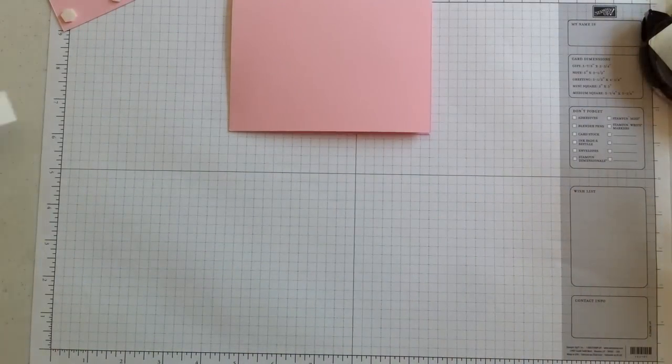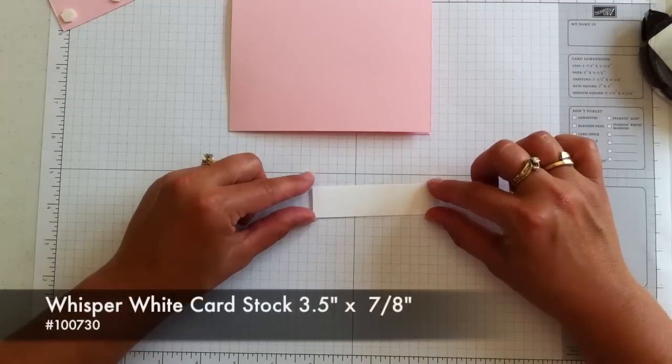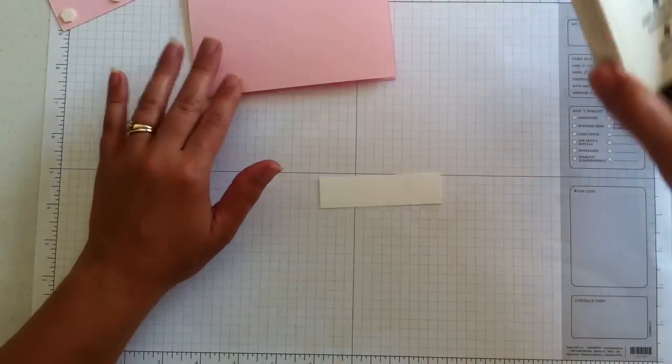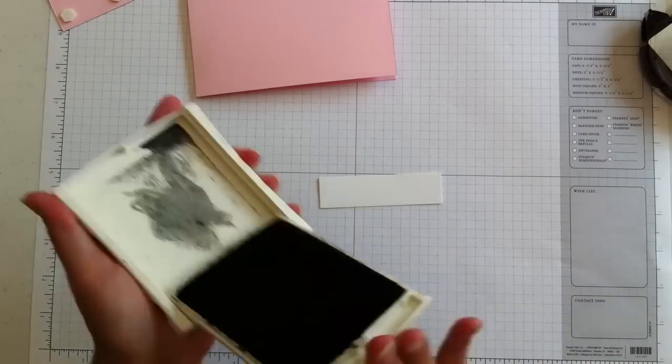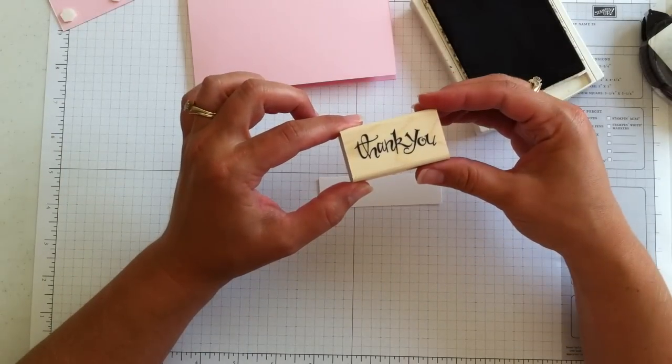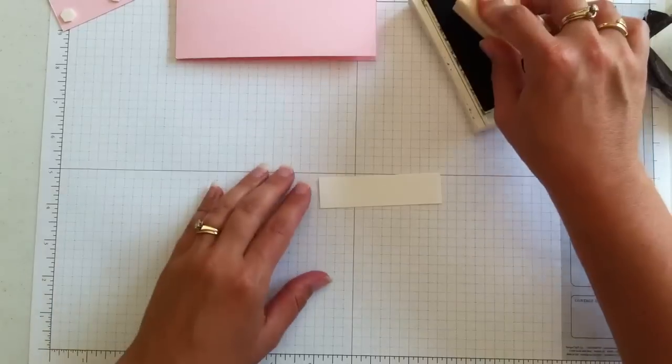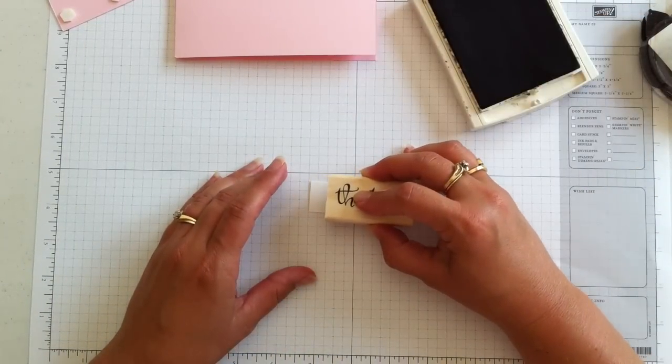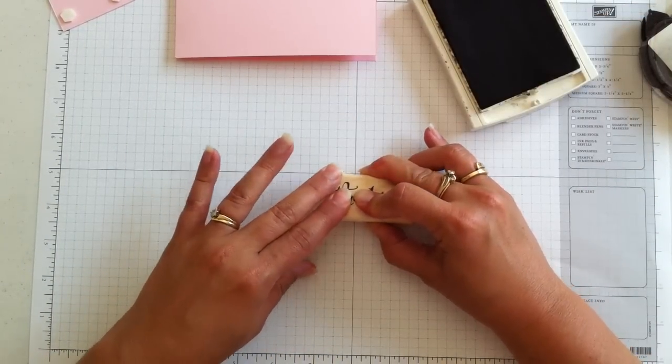Now one other piece that I'm going to stamp is this little piece of Whisper White. It's 3 1⁄2 inches by 7 1⁄8. So just a little bit under 1 inch. And this is from that Sassy Salutations. It's a thank you. Again, inking it up on basic gray. And just stamping it here.